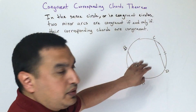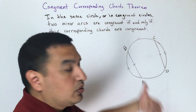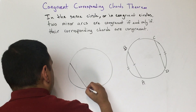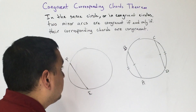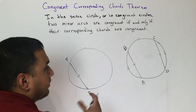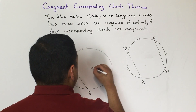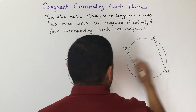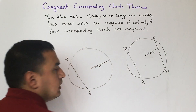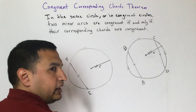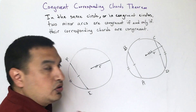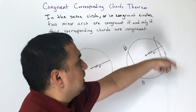The example given is for one circle, but the theorem also applies to congruent circles. If I have a separate circle with chord EF, for me to know those two chords are congruent, there's got to be something telling me the circles are congruent — usually equal radii. If the radii are equal, the circles are congruent, so the chords are congruent, and therefore arc EF is congruent to arc AB and arc CD.